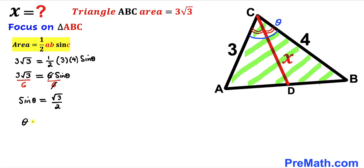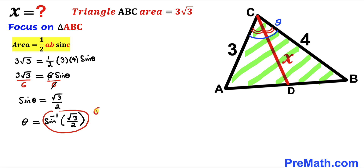Therefore angle theta equals sine inverse of square root of 3 divided by 2. We know that sine inverse of square root of 3 divided by 2 is simply 60 degrees, so angle theta turns out to be 60 degrees.